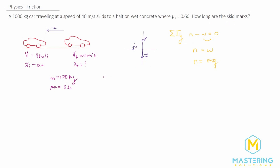To find the acceleration we'll use the force equation, and it's only going in the x direction, so we want a sub x. Dividing both sides by mass gives us acceleration in the x direction equal to the net force divided by the mass. The only force in the x direction is kinetic friction, so a sub x equals negative kinetic friction divided by the mass.